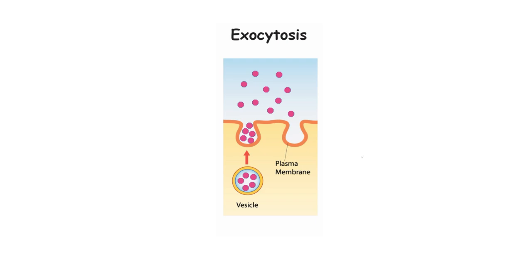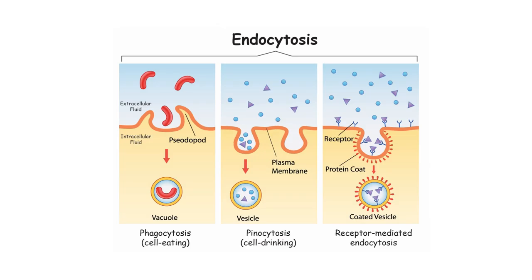Exocytosis is vital for the secretion of hormones, neurotransmitters, and other substances that play key roles in cell signaling and communication. A great example is the release of insulin by the pancreas — those pancreatic cells can release insulin that they have made through exocytosis. When blood sugar levels rise, insulin is released from those cells to help regulate glucose levels.